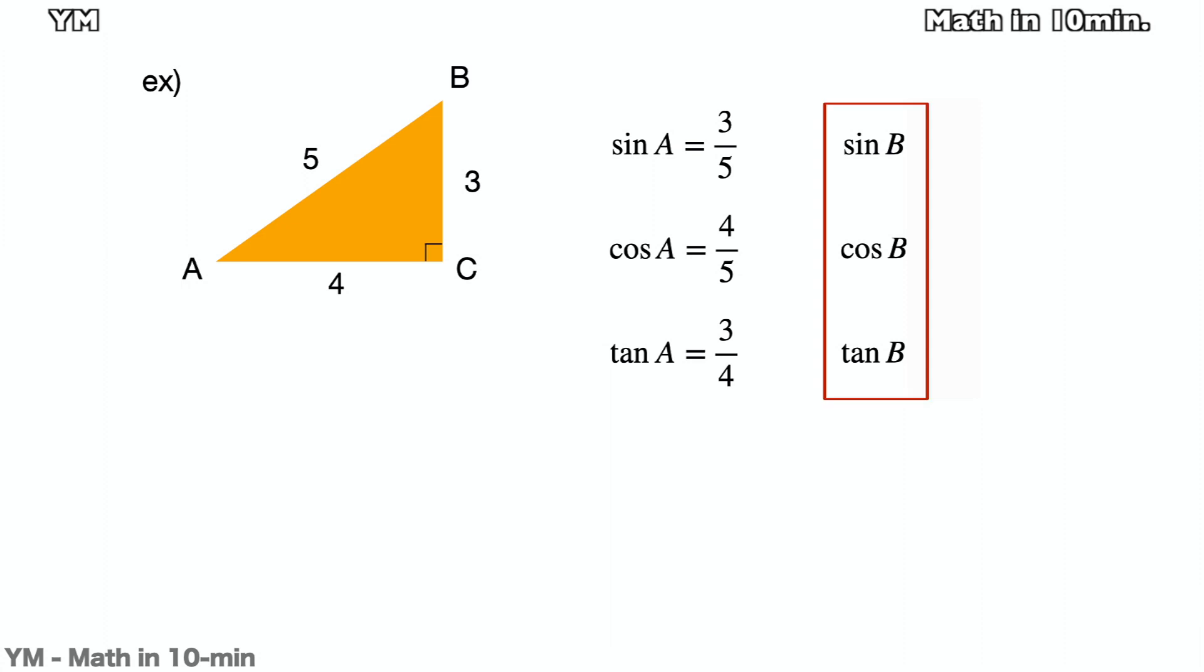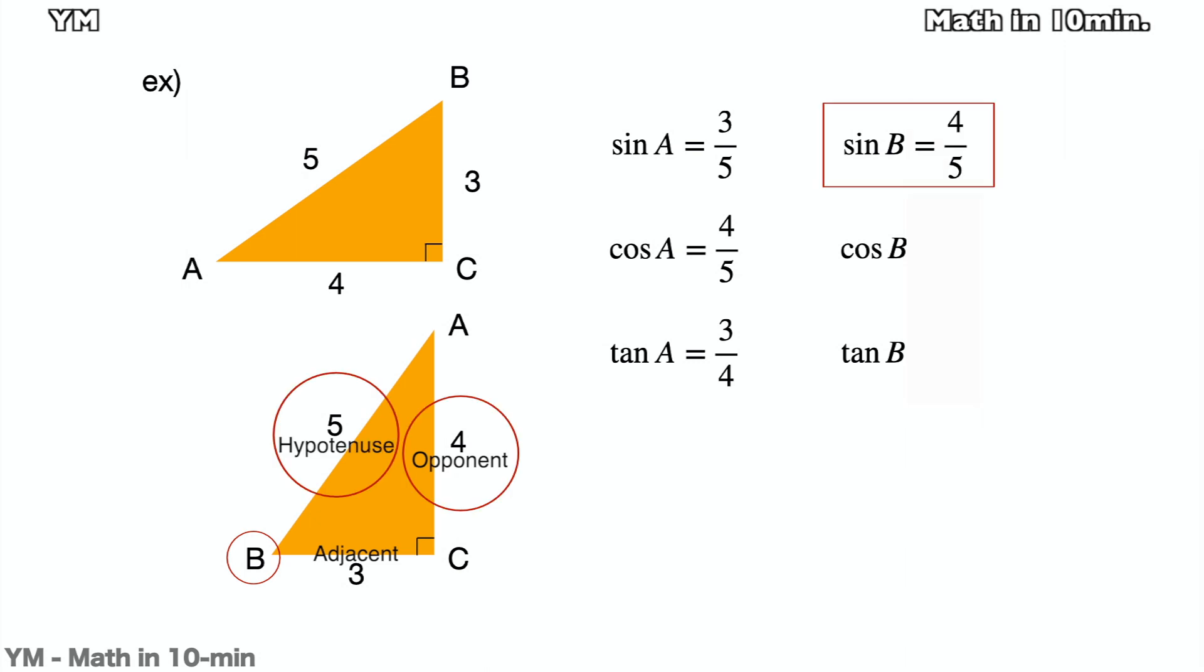Then what about sine B, cosine B, and tangent B? For the convenience, let's flip the triangle like below. Then for the trigonometrics of B, the line BC must be the adjacent and the line AC must be the opponent. So sine B is opponent over hypotenuse, which is 4 over 5. Cosine B is adjacent over hypotenuse, which is 3 over 5. Tangent B is opponent over adjacent, which is 4 over 3.